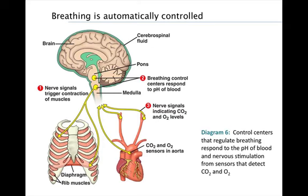Although we can voluntarily hold our breath or breathe faster and deeper, most of the time our breathing is under automatic control. Breathing control centers are located in parts of the brain called the pons and medulla oblongata. The control center in the pons smooths out the basic rhythm of breathing set by the medulla. Nerves from the medulla control center signal the diaphragm and rib muscles to contract, making us inhale. Between inhalations, the muscles relax and we exhale.